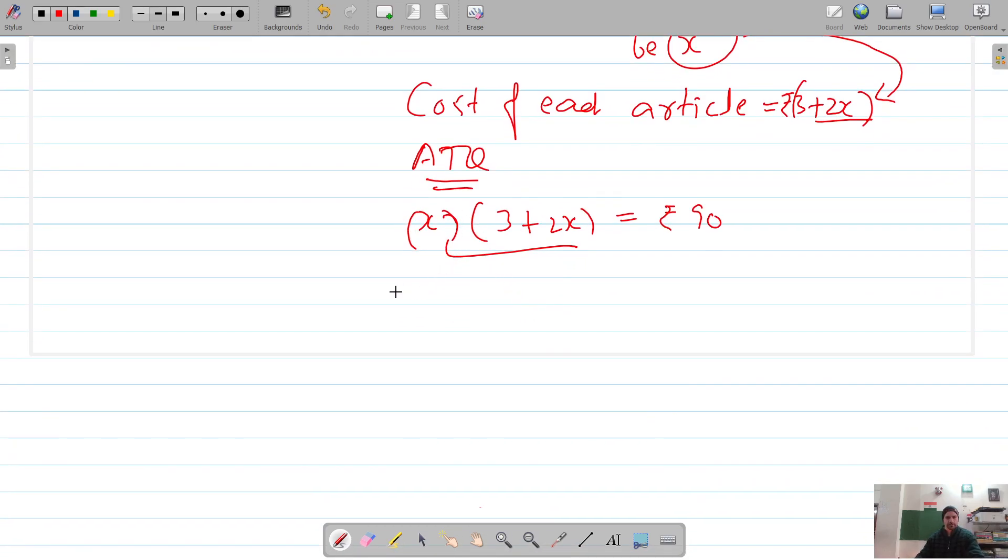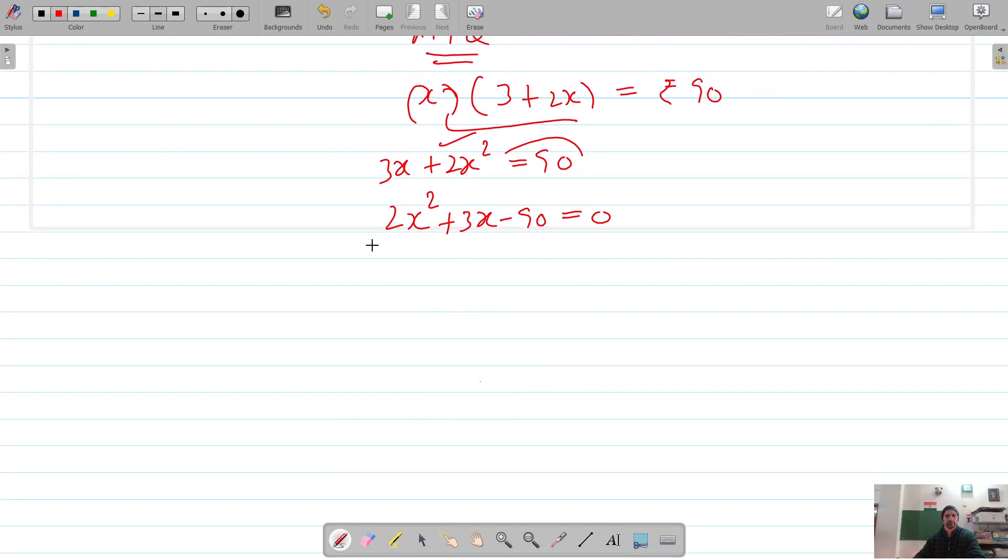If you multiply, this is 3x plus 2x squared equals 90. Shift 90 to the left-hand side and put them in decreasing order of the degrees, so 2x squared plus 3x minus 90 equals zero.